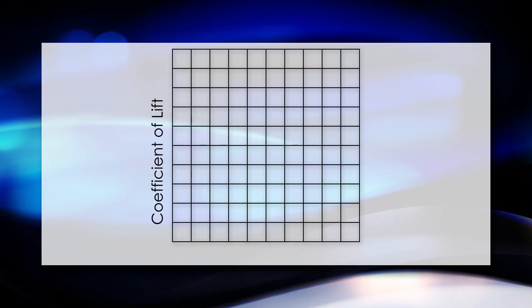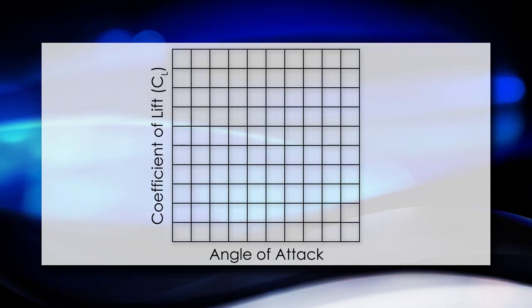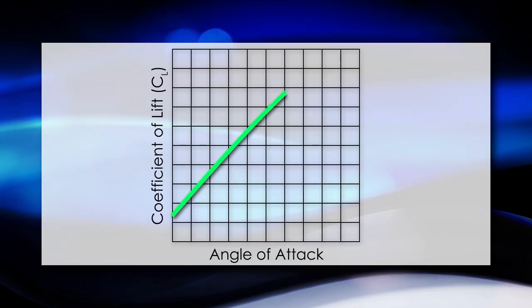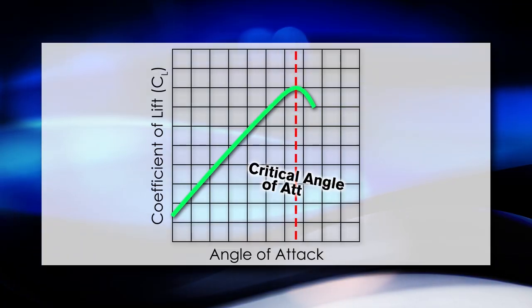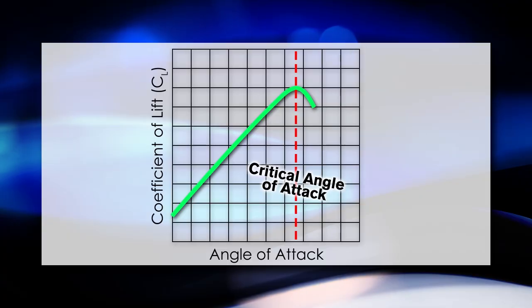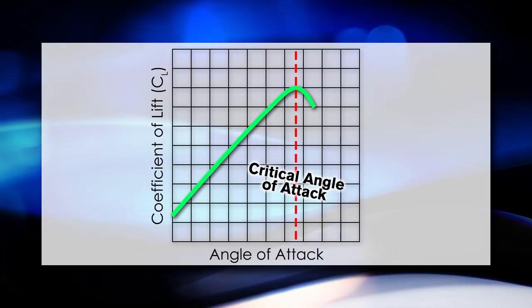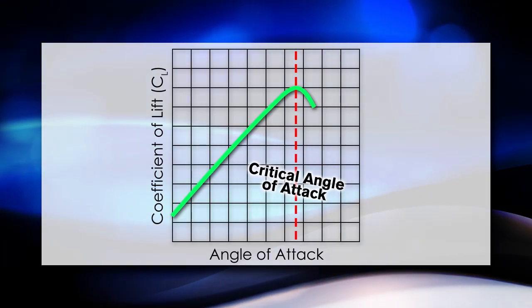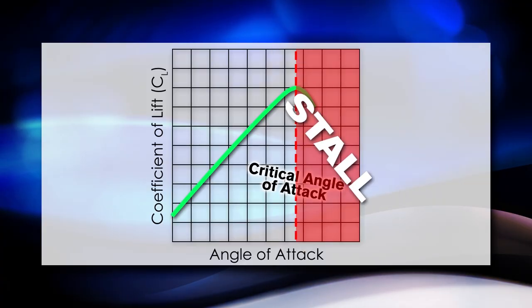This chart is plotting the coefficient of lift of a particular wing as its angle of attack increases. Lift will continue to increase until a certain angle of attack called the critical angle of attack. After this point, the wings still create lift, but the amount of lift created is decreased. This is called a stall.